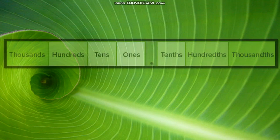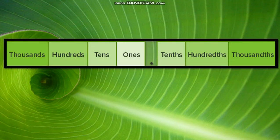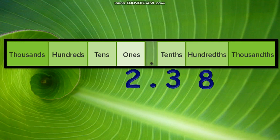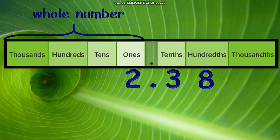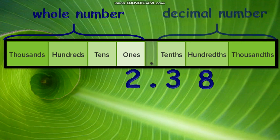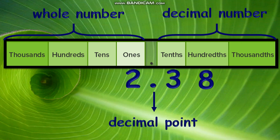Let us study the place value chart. An example is the decimal 2.38. To the left of the decimal point is the whole number, which we first discussed in the first quarter. On the right side of a decimal point we see the decimal number. Decimal numbers are less than 1. The whole numbers and decimal numbers are separated by a decimal point, represented by a dot.